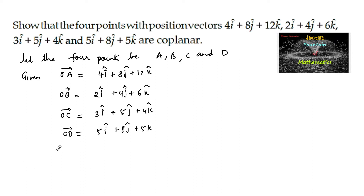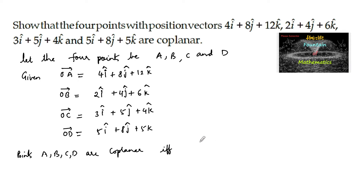So we need to prove that A, B, C, D are coplanar. Points A, B, C, D are coplanar if and only if the scalar triple product of vectors AB, AC, and AD must be equal to 0.